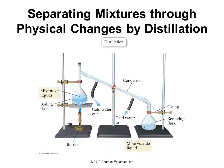We can separate mixtures through physical changes by distillation. Distillation involves a mixture of liquids being boiled — the more volatile components come over and are condensed by a water jacket, dripping into a separate container, while the less volatile component remains behind. This is a simple example of distillation.